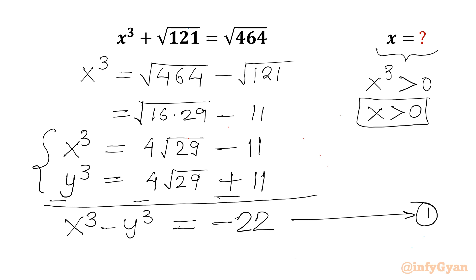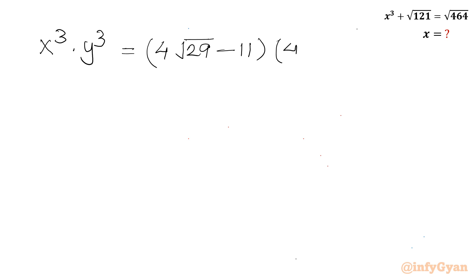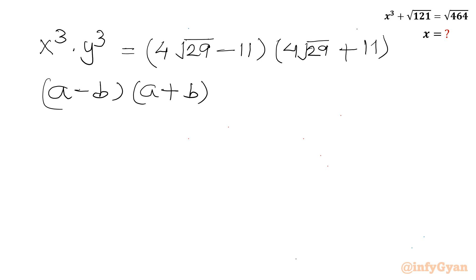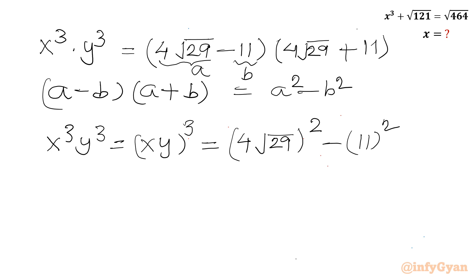Now I will take the product of x³ and y³. So x³ · y³ = (4√29 − 11)(4√29 + 11). I will use the identity (a − b)(a + b) = a² − b². So x³ · y³ = (xy)³ = (4√29)² − 11².